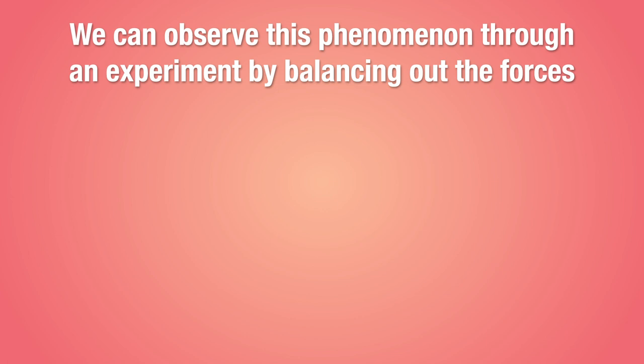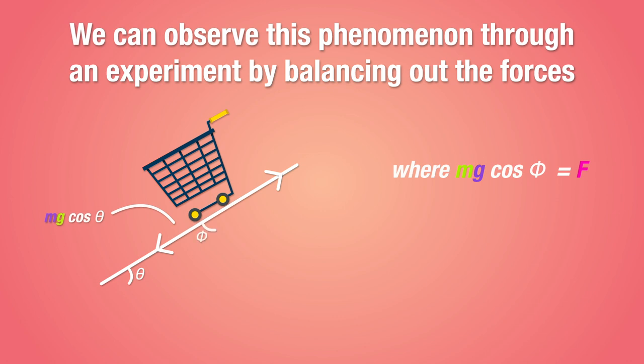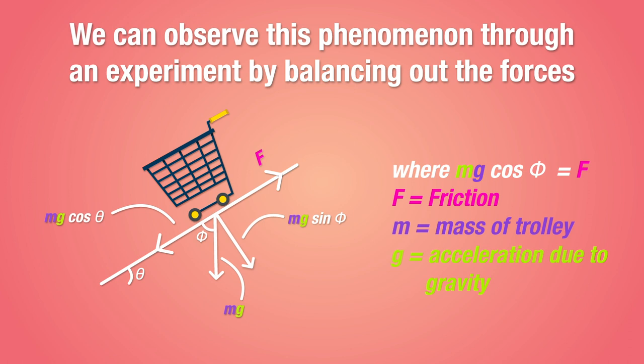Now the setup for this experiment is really simple. We have a trolley that will be rolled down an inclined plane. The inclined plane itself is at an angle so that the force of friction acting on the trolley is equal to the force of gravity pushing the trolley forward. This is called a friction compensated plane. We're also going to attach a speed measurement device to the trolley so that it records the trolley speed as it rolls down the inclined plane.